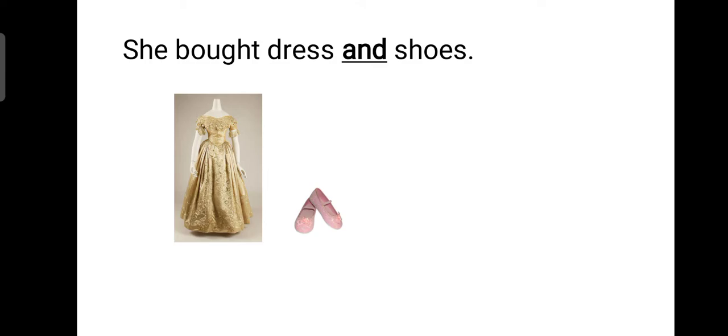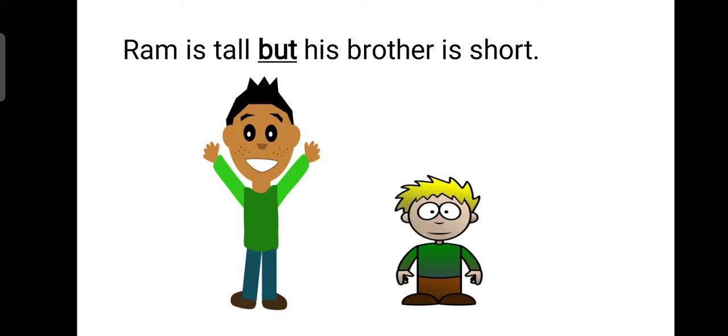Ab aap aage chalyei. Toh aapko see, Ram is tall but his brother is short. Ram lamba hai par us ka bhai chota hai. Yaha pe hum bilkul do opposite chizho ki baat karei hai. Ek tall hai aur ek short hai, so isi liye hum ne yaha pe BUT use kiya hai. Samaj aapko?